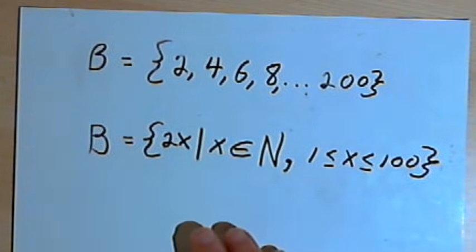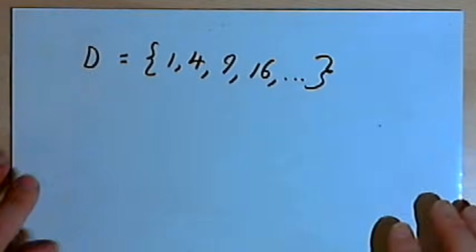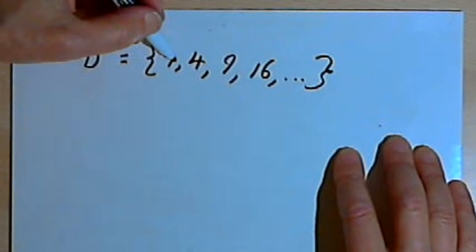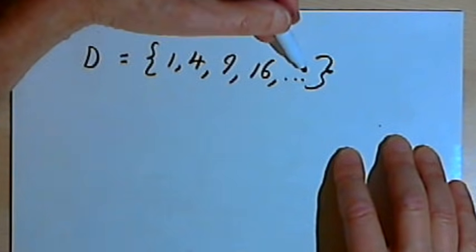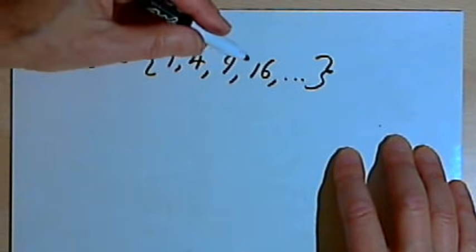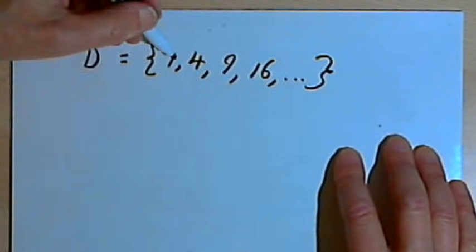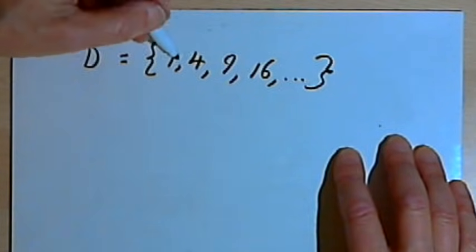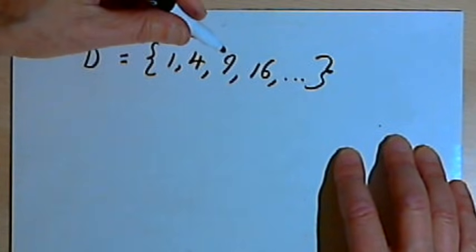Here's one more. A little trickier, but maybe not that hard. So I've got set D. And set D is the numbers 1, 4, 9, 16, and so on, the ellipsis. And if you look at these numbers, you realize these are all perfect squares, starting with 1 squared, and 2 squared, and 3 squared, and 4 squared. Now the fact that these are squares is going to be a hint as to how I write the set builder notation.